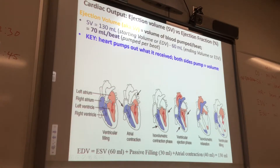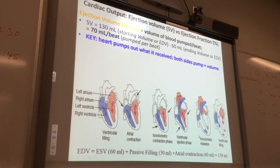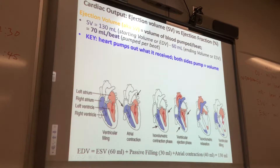The right side doesn't have to pump the blood as far — it just pumps blood to the lungs — so it doesn't have to be as thick, but it does pump the same volume. If the right heart pumped out more, or the left heart pumped out more, you'd get edema.